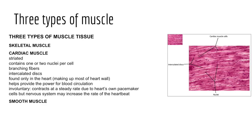Next, we have cardiac muscle, which is similar to skeletal muscle in being striated. Cardiac muscle contains one or two nuclei per cell, and fibers are branching, in contrast to the near-perfect cylindrical fiber shape of skeletal muscle. Cardiac muscle fibers connect by intercalated discs — specialized junctions that allow cells to communicate directly with one another. Cardiac muscle tissue is found only in the heart and is involuntary, meaning we don't have conscious control of its contraction and relaxation.